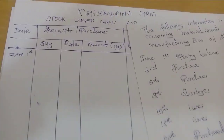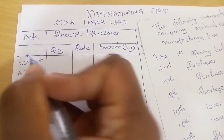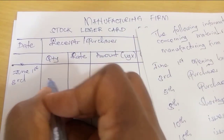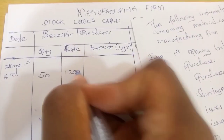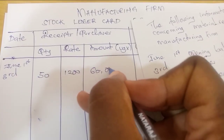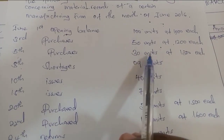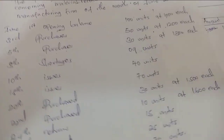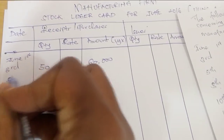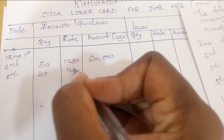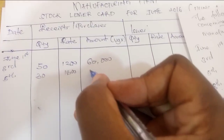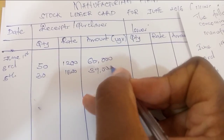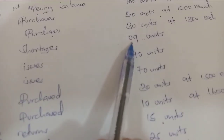On the 3rd there were purchases of 50 units at 1,200 each, so under purchases: 50 units at 1,200 each, which gives 60,000. On the 5th, purchases of 30 units at 1,300 each. As stated, purchases are rated straight, so 30 units at 1,300 gives an amount of 39,000.